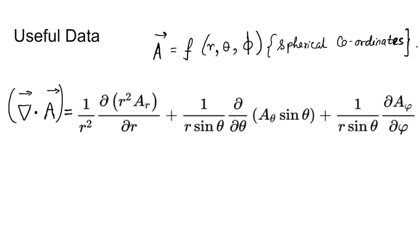Useful data: r is nothing but root over x squared plus y squared plus z squared. This is Cartesian coordinate, and here you get the radial vector length.